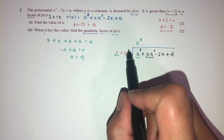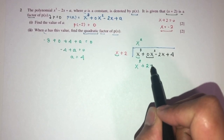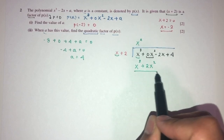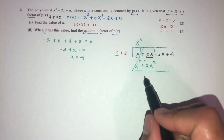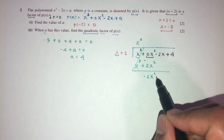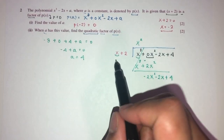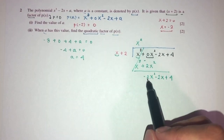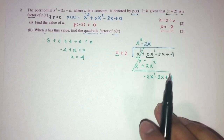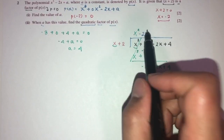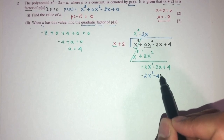Multiply x² by (x + 2) to get x³ + 2x². Subtract: 0x² − 2x² = −2x², bringing down −2x gives −2x² − 2x + 4. Next step: to make x become −2x², multiply by −2x. Taking (x + 2)(−2x) gives −2x² − 4x.